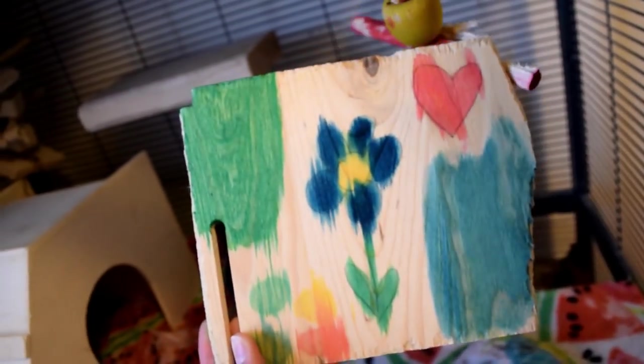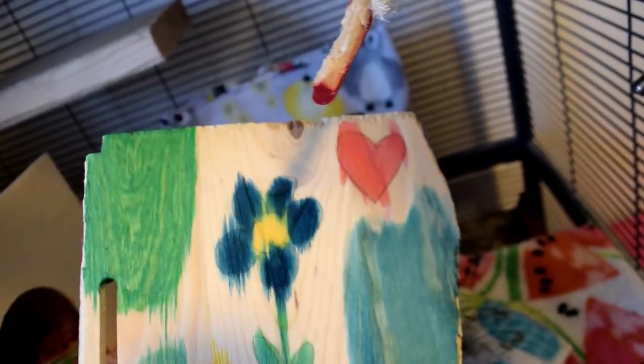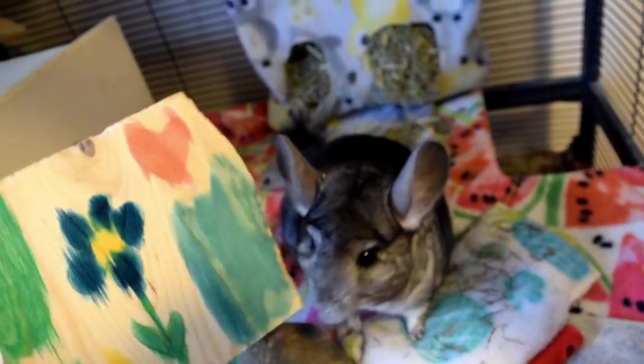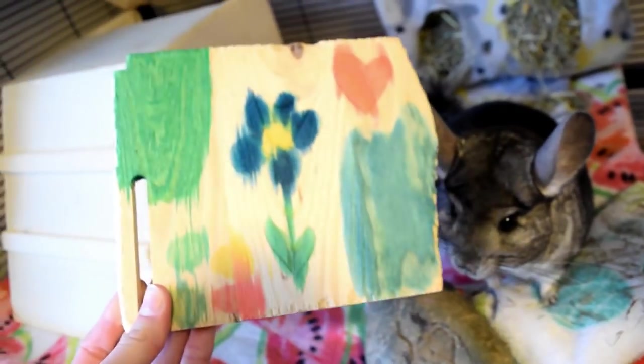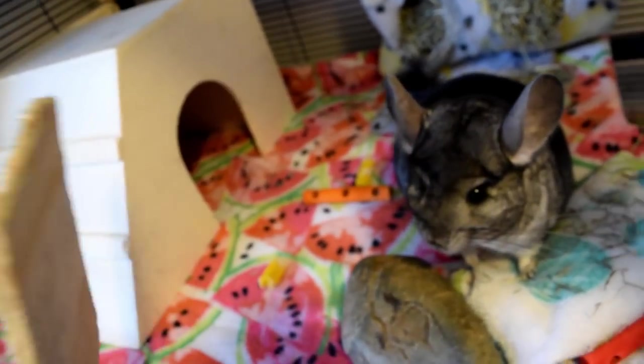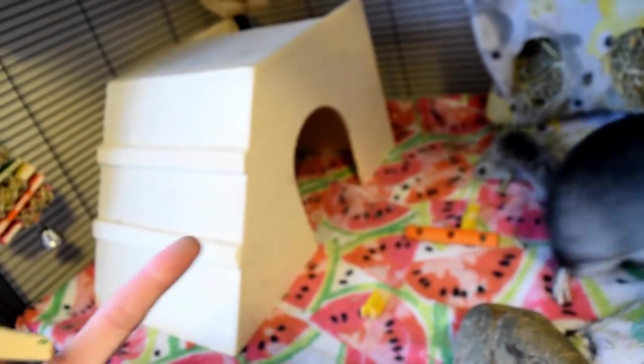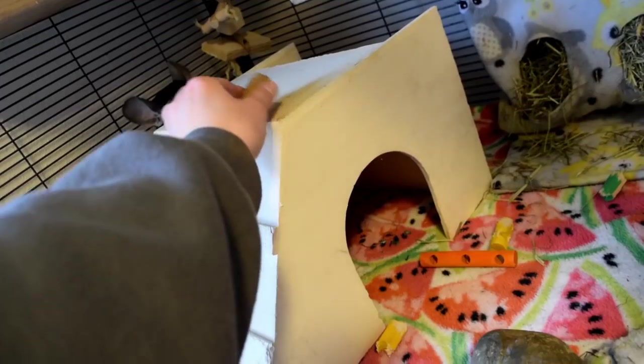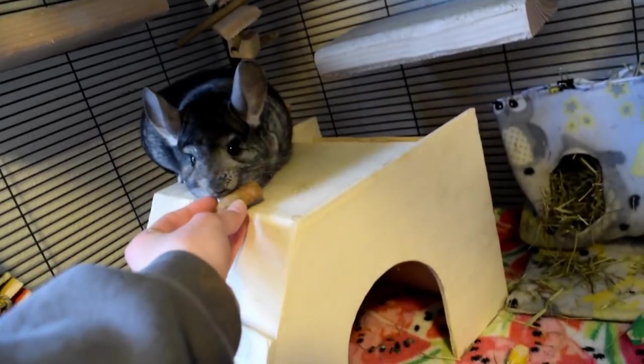But either way this is just an example of what you guys can do to get your wood to be dyed and it just makes your cage a little fancier. Now I just did it on this one little piece of wood to show you how to do it but you guys can do it on your huts, you can do it on your ledges or anything else in the cage that you would like to.